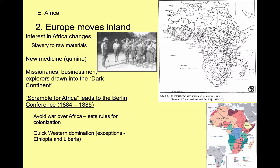Everything on the map that is anything but yellow is controlled by Europeans, with two exceptions: Ethiopia and Liberia. Liberia stays independent because it started as a U.S. philanthropic colony — before the Civil War, Americans created a charity that tried to free African slaves and bring them back to Africa in the colony of Liberia, short for Liberty. It's not owned by the United States but is supported by U.S. organizations. Ethiopia successfully adopted Western technology, modernized its military, and when Italy tried to take over, the Ethiopians kept the Italians out. Those are the only two exceptions in this vast continent.